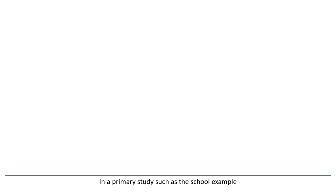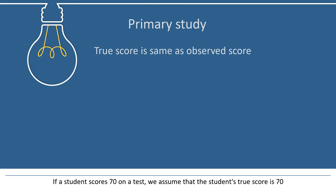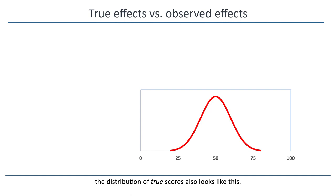In a primary study, such as the school example, we generally treat the observed score as the true score. If a student scores 70 on a test, we assume that the student's true score is 70. So, we're working with one distribution of scores. If the distribution of observed scores looks like this, the distribution of true scores also looks like this. If we want to ask about the dispersion in scores, there's only one question to ask: how much do the scores vary?